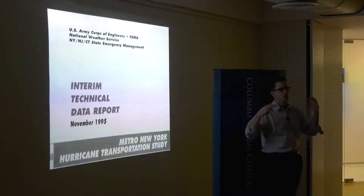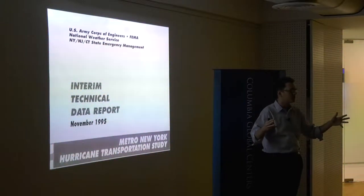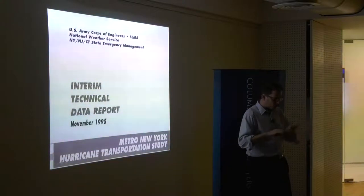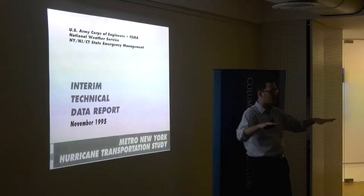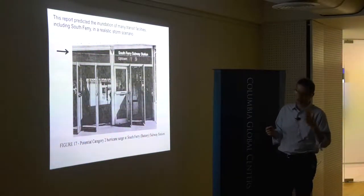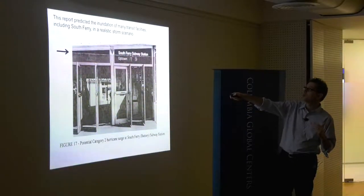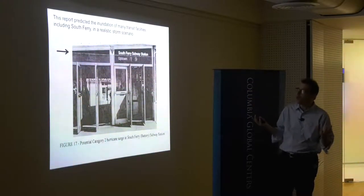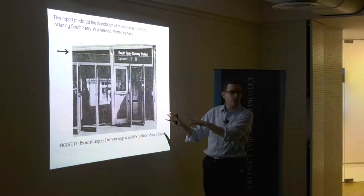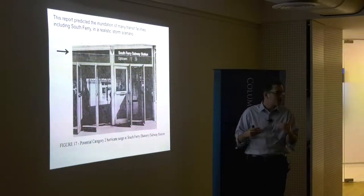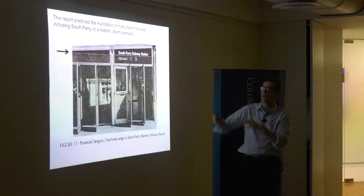The hurricane center knew storm surge was the risk in New York City. They did simulations of worst-case scenarios, figured out how high the water could get, and overlaid that on maps of transit facilities to figure out which would flood. The old South Ferry station appears in that report — with a line showing how high the water could get — almost 20 years before Sandy, predicting exactly that this facility would flood.